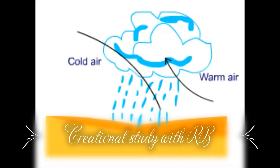The fourth type is cyclonic rainfall. In a cyclone, warm air and cold air meet. The warm air rises over the cold air, condensation occurs, and rain falls. This is called cyclonic rainfall or frontal rainfall.